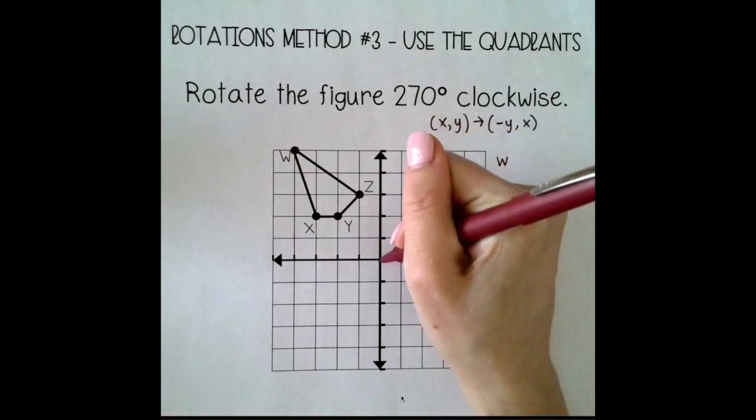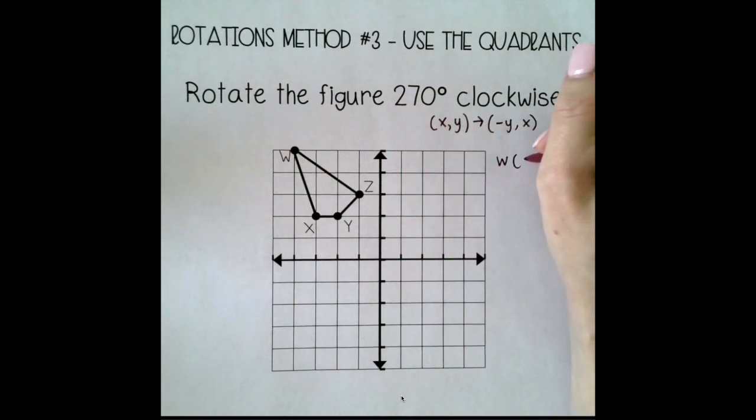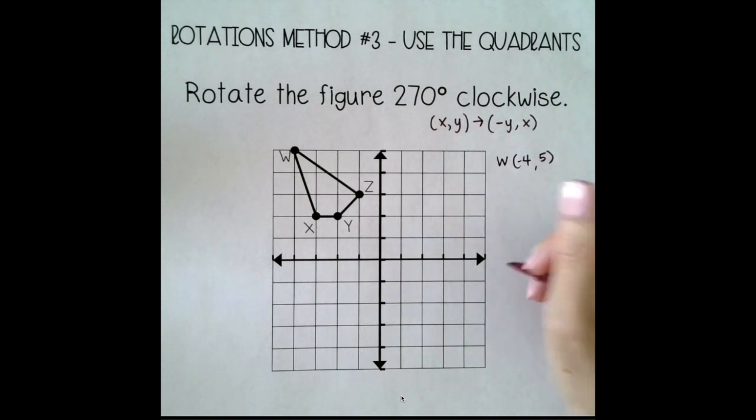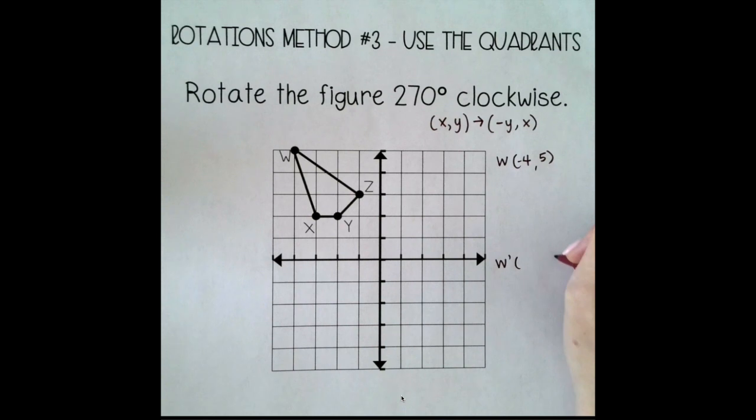So here I have... I'm going to write W is negative 4, 5. So if I were to apply the coordinate rule for this coordinate, this tells me I want to write the y value first, but change the sign. So I want to write 5 first, but change the sign. Then I want to write my x value, but I want to leave it the same.